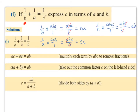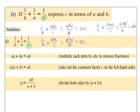If 1 over b plus 1 over a equals 1 over c, express c in terms of a and b — so that's what we're trying to get on its own. If we take all the denominators b, a, and c and combine them, we get a common denominator of abc. So if we multiply each term by abc, we will remove the fractions.